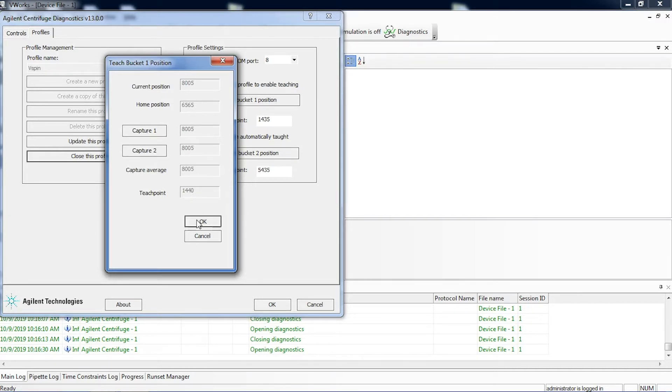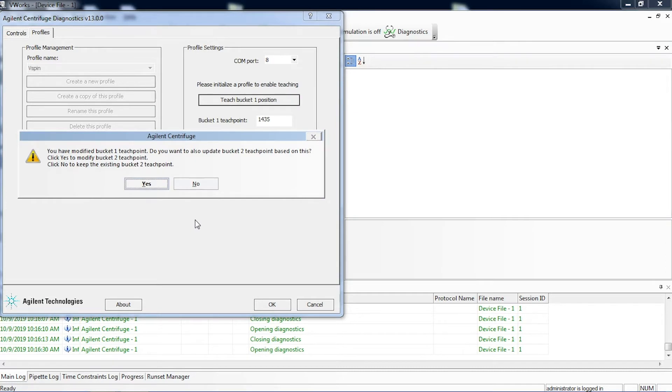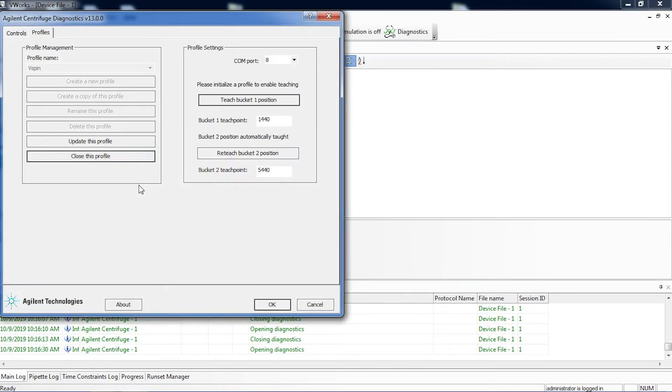Once those numbers are filled, click OK. V-Works will ask if you want to update bucket 2 as well. Click yes, and your new bucket positions will be taught.